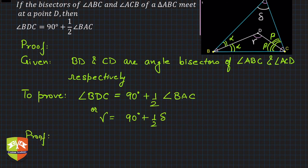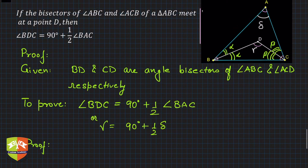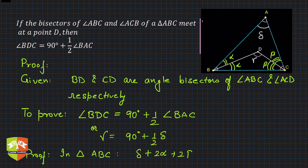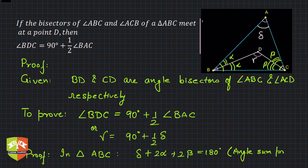In triangle ABC, applying the angle sum property: δ plus twice α plus twice β equals 180 degrees. Here twice α is angle B and twice β is angle C, since BD and CD are angle bisectors. Let this be equation 1. The reason is the angle sum property of a triangle.